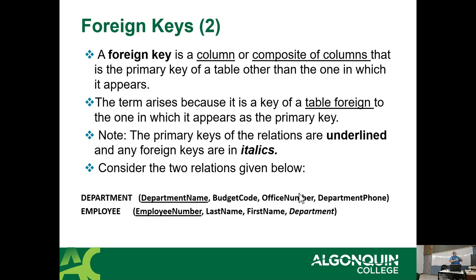In the department and employee example: an employee has an employee number, last name, first name, and a department. The department is foreign to the employee because its value is defined elsewhere. When you get hired somewhere, they're not going to create a whole new department just for you — they're going to assign you to an existing department, say R&D. The value of R&D, even though you're associated to it, does not come from you — it comes from an external source. Therefore it's foreign, which is why it's called a foreign key.